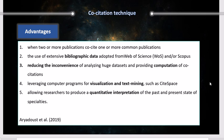Now reviewing the advantages of co-citation analysis: one advantage is that it offers the use of extensive bibliographic data, which we can download from the Web of Science, Scopus, or other databases — for example, Dimensions, which has recently been adopted into CiteSpace, the software package that we use. Another advantage is that it helps us reduce the inconvenience of analyzing huge datasets and provides a quantitative computation of co-citations. It also leverages computer programs for visualizing and text mining.